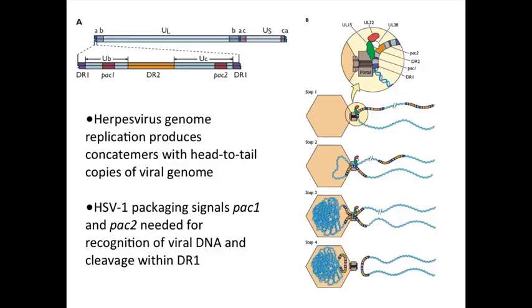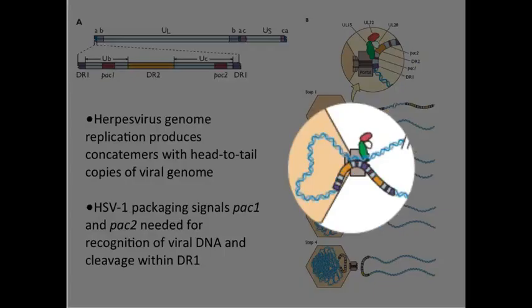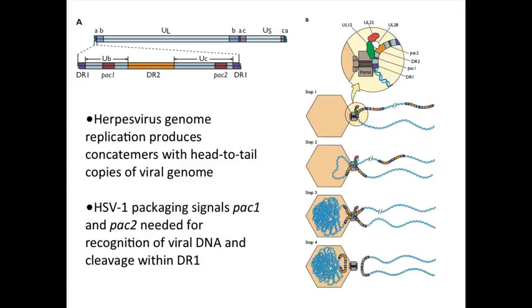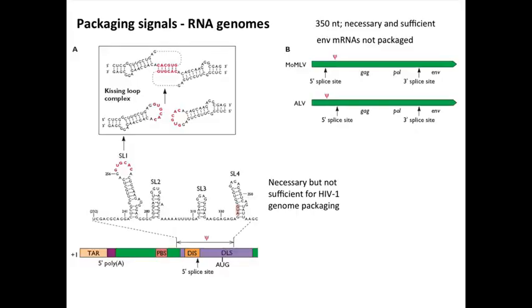There are two signals that tell the packaging process to stop. One is when you have a head full of DNA — a unit-length genome — discerned by going from one A repeat to the other. The other is that you now have the packaging sequences in opposition. A head full plus both packaging sequences signals an endonuclease to cleave the DNA, leaving a single genome in the head. That prevents you from cleaving the DNA too early — you have to wait until the head is full with the entire genome, then another set of packaging sequences at the other end triggers cleavage.